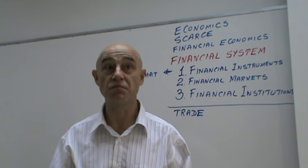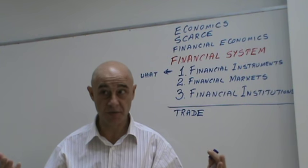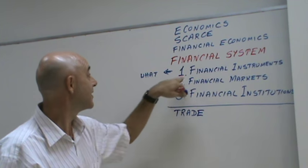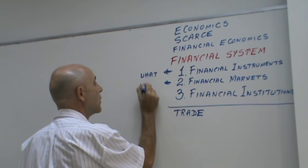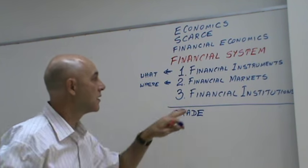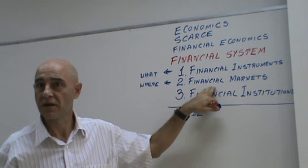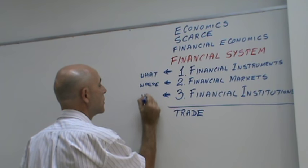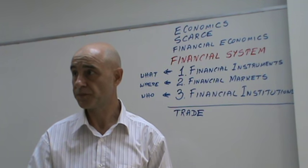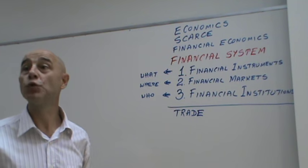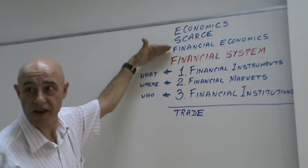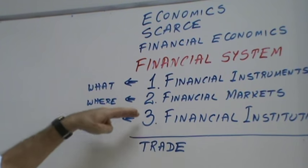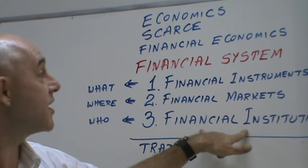To trade means to buy and sell. In financial economics, it means to buy and sell financial instruments. Financial markets tell you where — where are the financial markets. Financial institutions tell you who. Now that I've said what is economics and what is financial economics, we define financial economics as the subject of the financial system and explain what the financial system is.